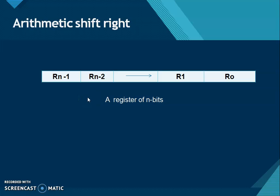So arithmetic shift right says that when we perform shift right, the sign bit will remain unchanged as well as this Rn-1 bit will shift to Rn-2, Rn-2 will shift to the next one and so on. And this R0 bit will get lost.